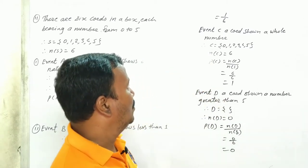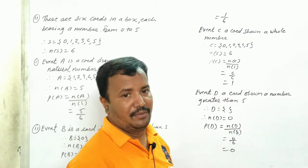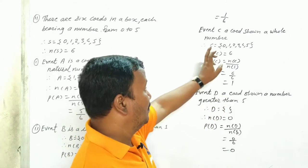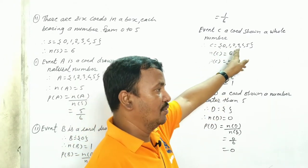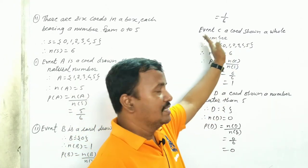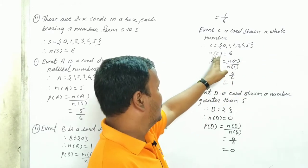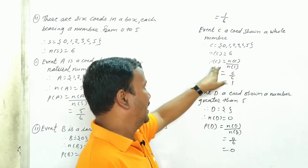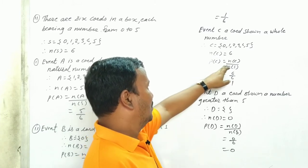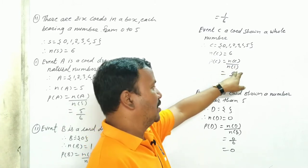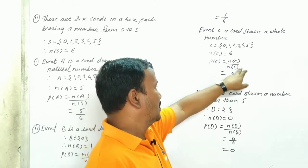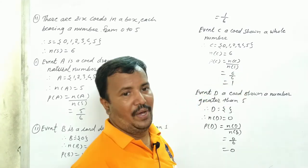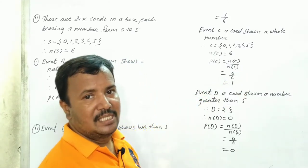Event C: a card drawn shows a whole number. Whole numbers are 0, 1, 2, 3, 4, 5. So number of C is equal to 6. Probability of C is equal to number of C upon number of S, that is 6 upon 6, which equals 1.